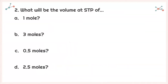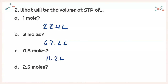For number two, it says don't use a calculator — use your brain. What will be the volume at standard temperature and pressure of 1 mole? We just solved for this: at 1 mole the volume is 22.4 liters. Now what about 3 moles? We'll need 3 times as much volume, so that gives us 67.2 liters. What about 0.5 moles? That means we need half the volume, so we get 11.2 liters.